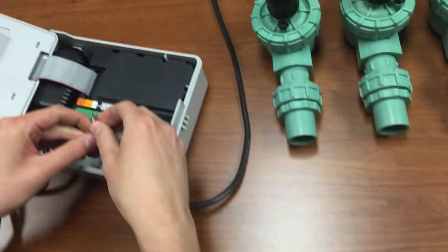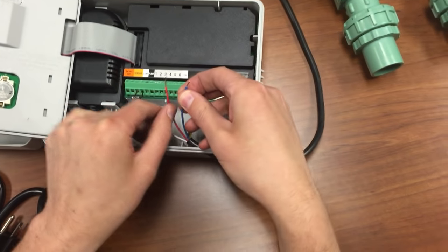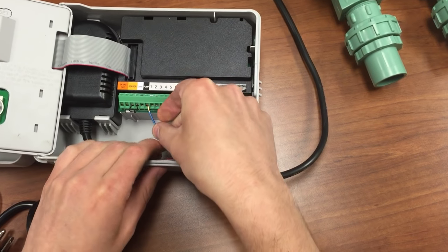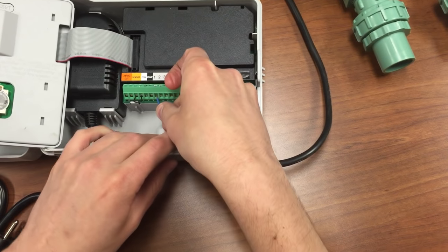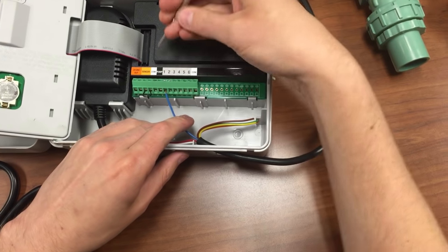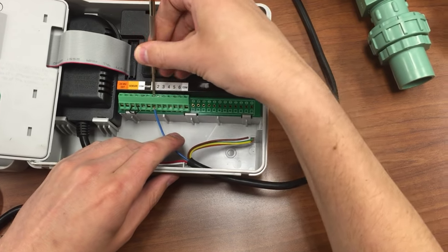And again, you'll remember that in this example, I believe we used the blue wire for zone one. So you would just insert that into zone one and tighten that down. It's got a screw on the top.